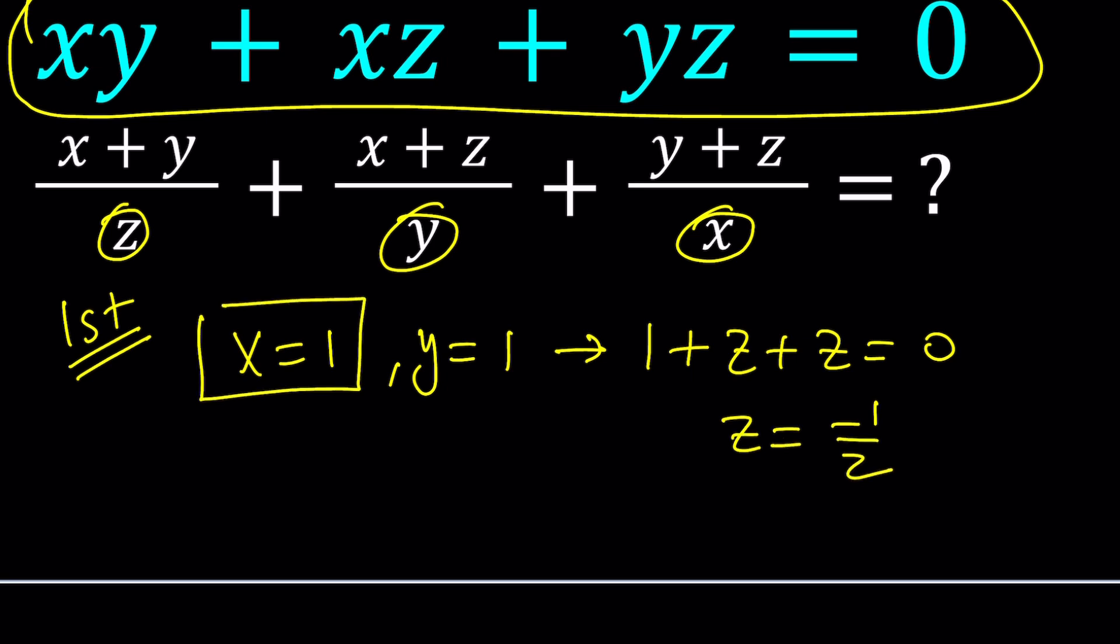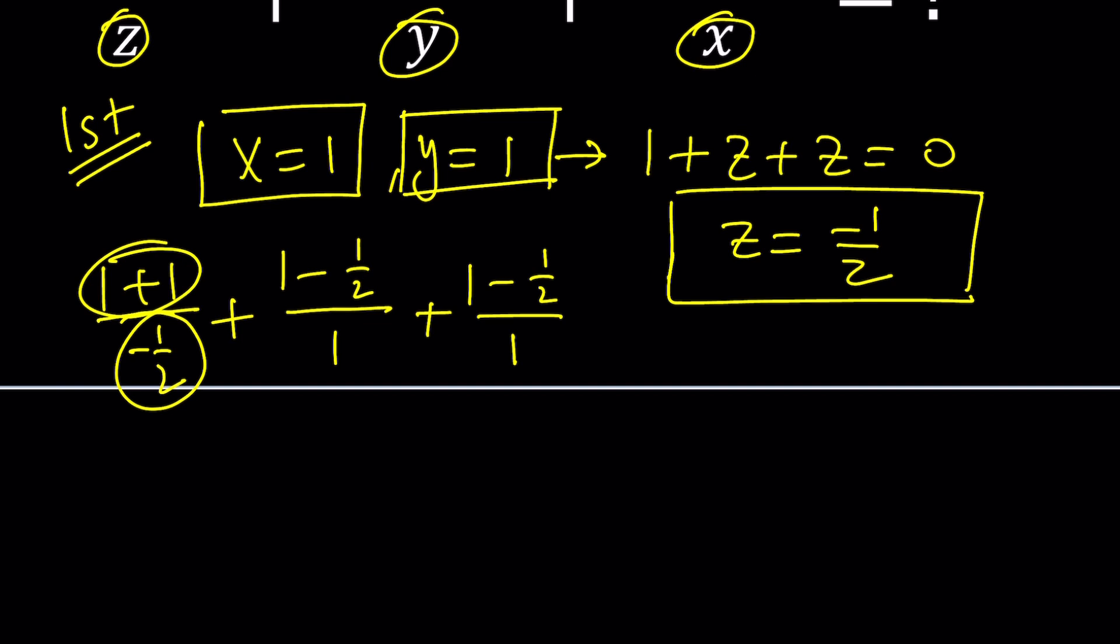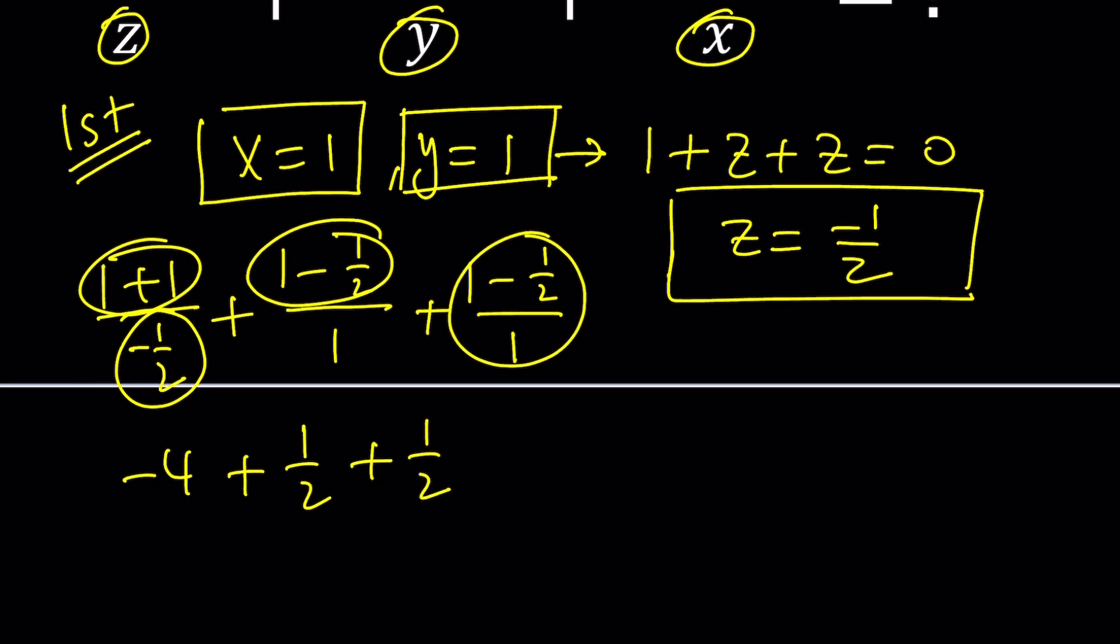Now we got these values and they satisfy the first equation. So what happens if you plug those into the second one? x plus y is 1 plus 1 divided by z which is negative one half, then x plus z is 1 minus one half divided by y which is 1, then y plus z is 1 minus one half divided by 1 again. This is 2 divided by negative one half that will be negative 4. This would be one half divided by 1, one half plus one half is 1. Negative 4 plus 1 is negative 3.